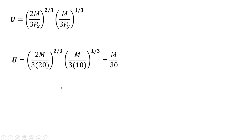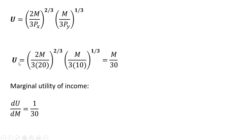What is the marginal utility of income? Take the derivative of the indirect utility function with respect to income, and you get 1 over 30. That's it — I hope you found this video helpful.